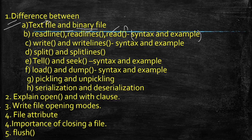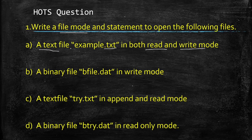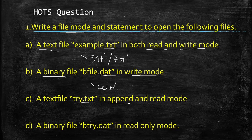These are the questions you have to remember. Now I am going to concentrate completely on the hot questions. What are the different file opening modes available to open a text file and a binary file? For example, if a text file example.txt is opened in both read and write mode, the mode you will use is r+ or +r. For a binary file with extension .dat in write mode, the mode is wb.